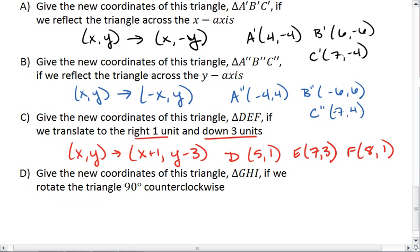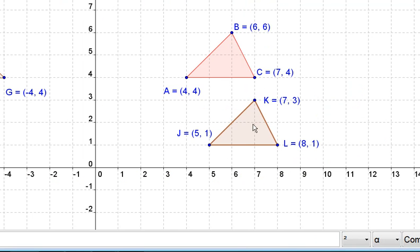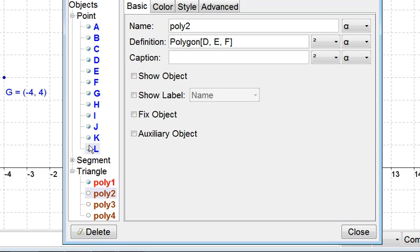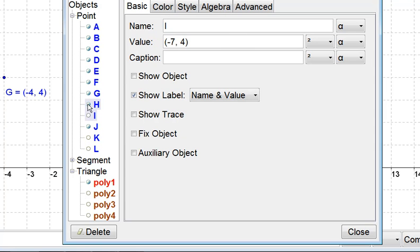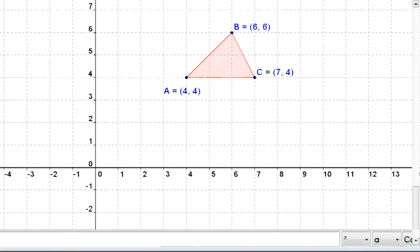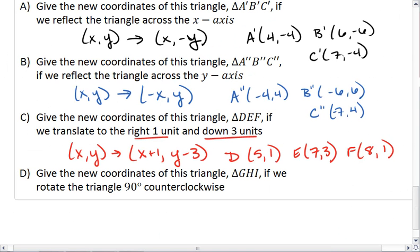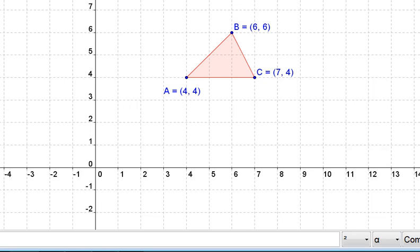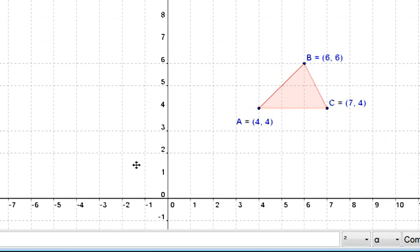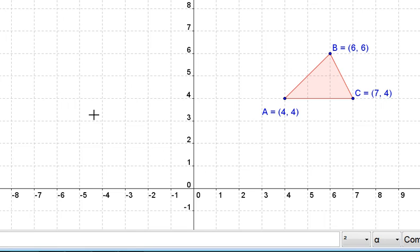Lastly, we are going to rotate our triangle. To do this, let's get rid of all the other polygons we've created. We're going to rotate our triangle. We're going to rotate at 90 degrees counterclockwise, which means we're going in this direction. And we're going to end up from quadrant 1 into quadrant 2.